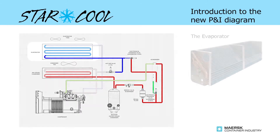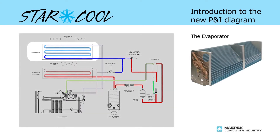In the diagram, next to the expansion valve for the evaporator, is the evaporator coil. This is located inside the container. It can be accessed from the front through the two inspection covers for the evaporator motors.